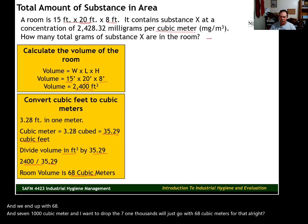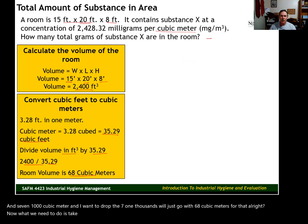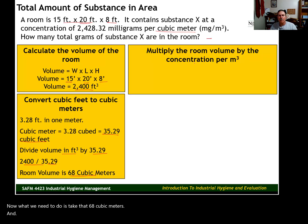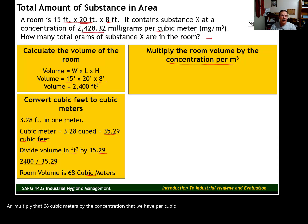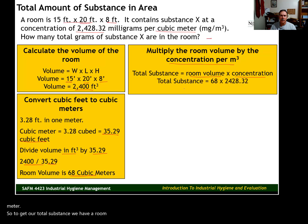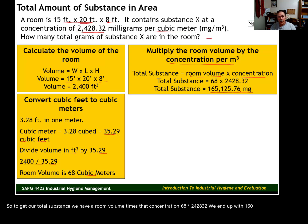Now what we need to do is take that 68 cubic meters and multiply it by the concentration per cubic meter. There are 2,428.32 milligrams per cubic meter. So to get our total substance: room volume times concentration — 68 times 2,428.32 — gives us 165,125.76 milligrams in the room.